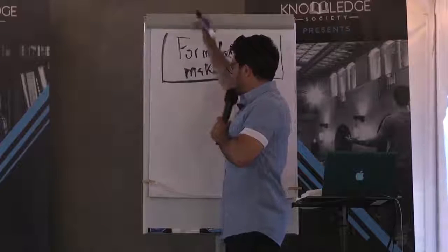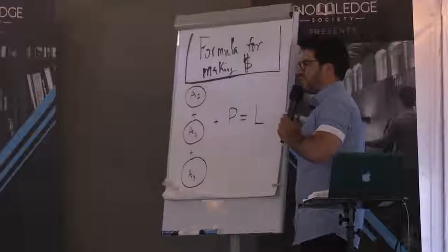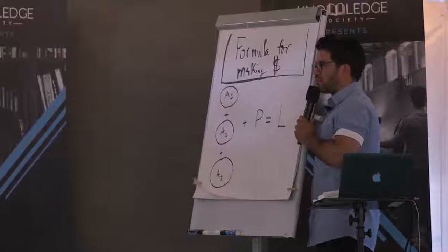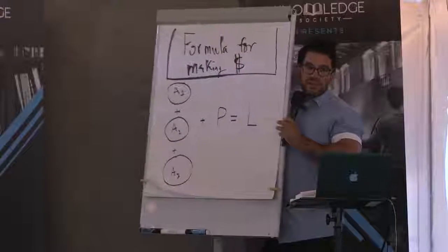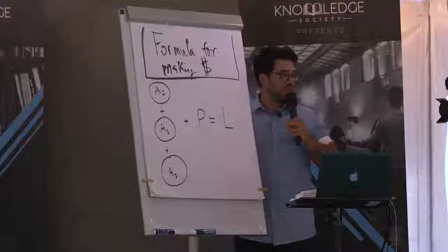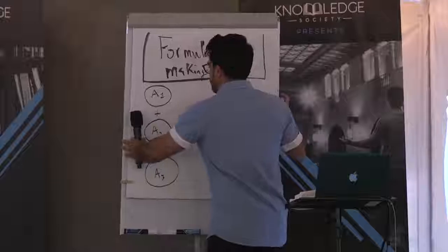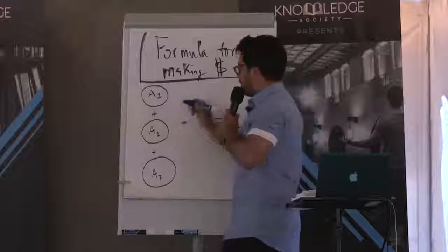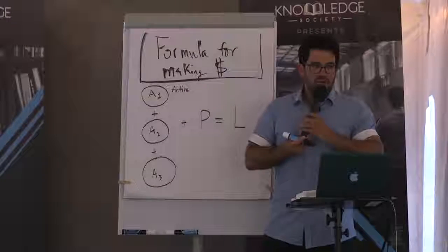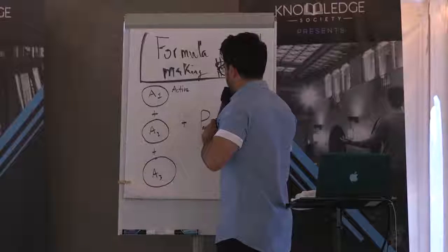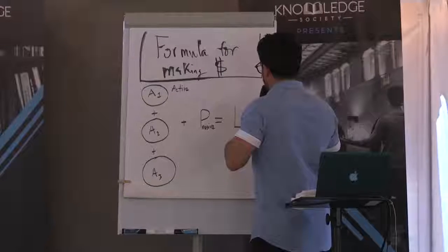So here's the big picture formula. You can write this down. You got A1 plus A2 plus A3. Then you add on top of that P and that gives you L. This way, everybody got it? A stands for active. So you have three active sources of income. P stands for passive. And L stands for lifestyle.